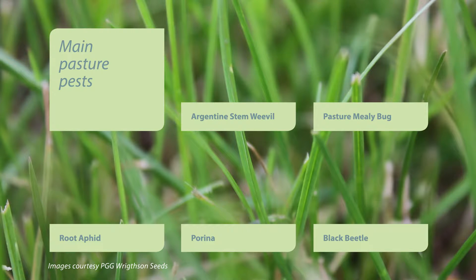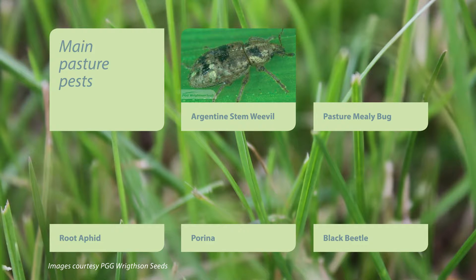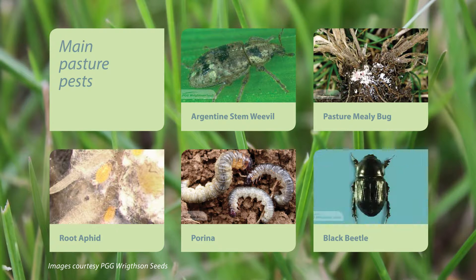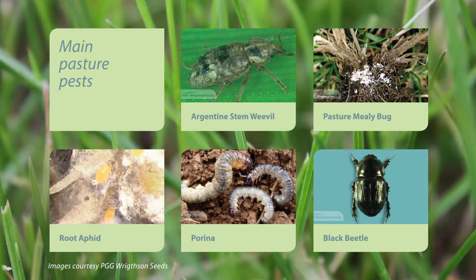The main pests affecting pasture establishment and long-term persistence are Argentine stem weevil, pasture mealy bug, root aphid, Porina caterpillar, and in many parts of the North Island the African black beetle. The pest numbers build up over a period of time and that reduces the persistence of your pasture. The key to novel endophyte selection is in knowing what pest is prevalent in your area, and the endophyte should always be the first criteria when selecting your pasture species.